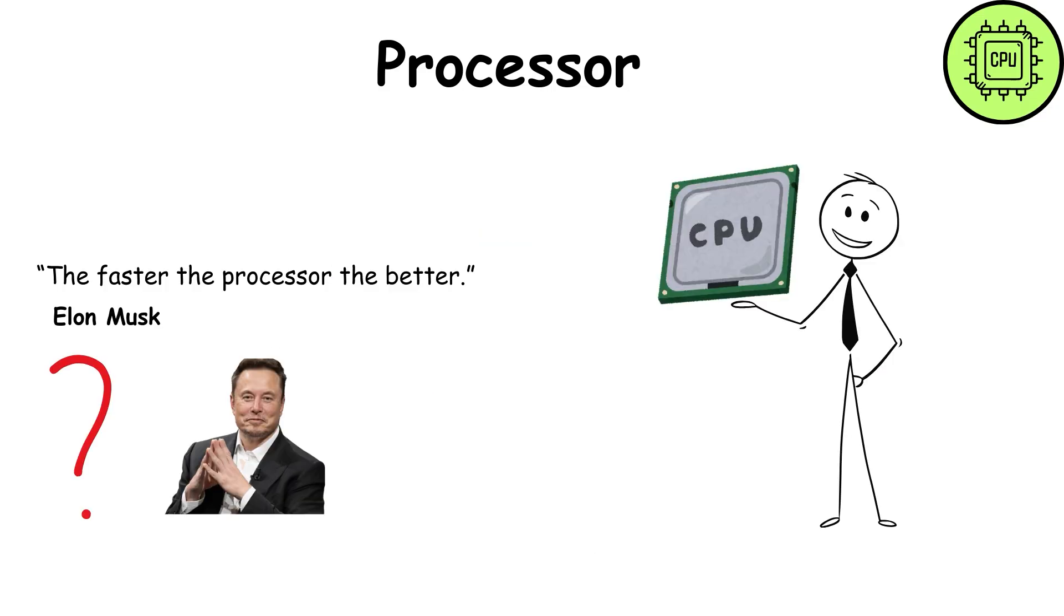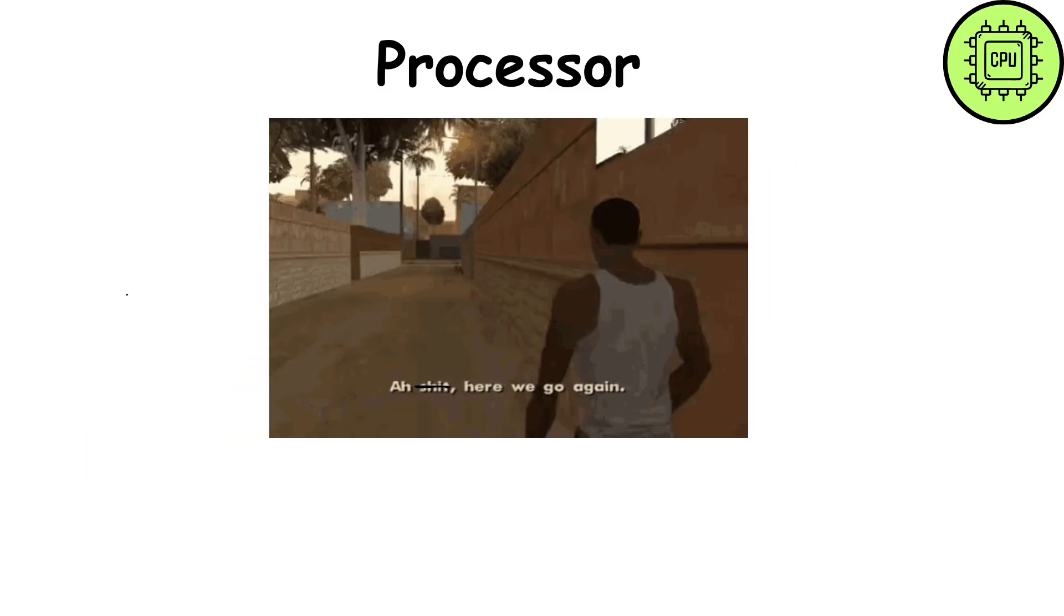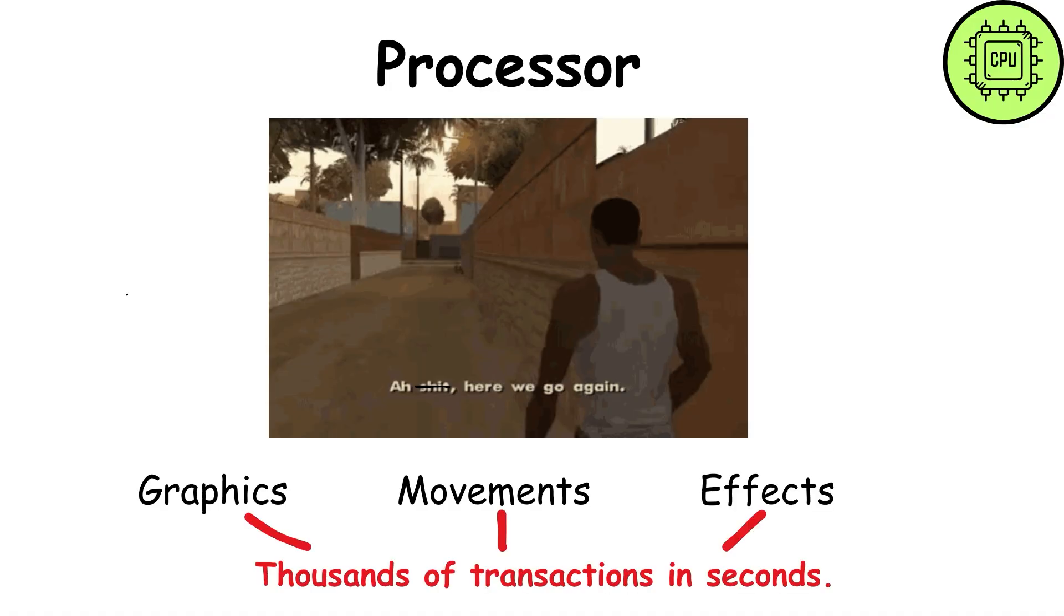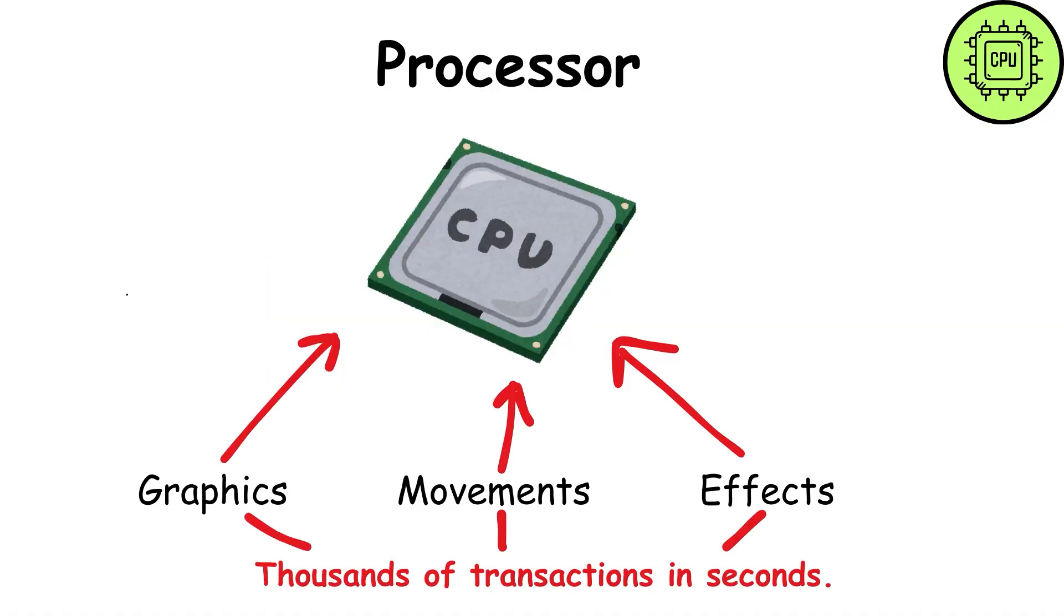A fast CPU makes the computer respond instantly, while a slow one can delay even simple tasks. When you launch a game, thousands of operations happen every second—graphics, movements, effects. The CPU processes all of this, calculating what happens and when, from your character's jump to the enemy's AI.